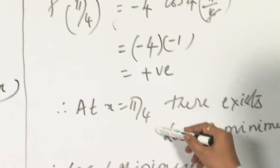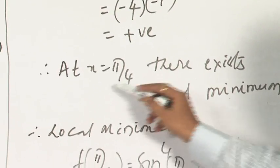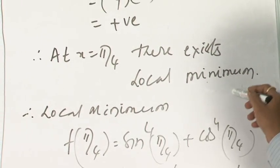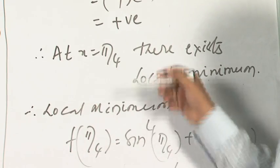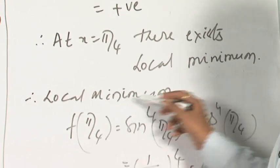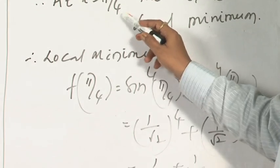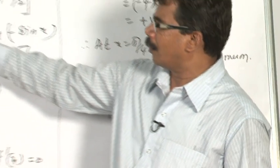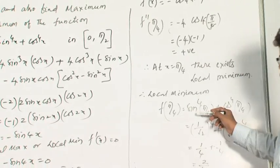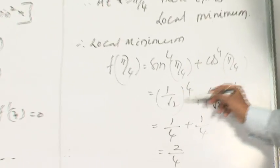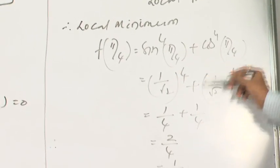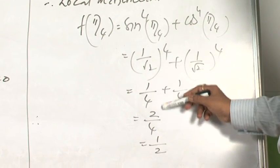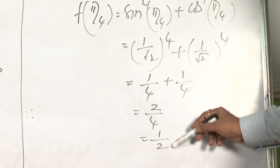So x = π/4 is called the point of local minimum. If x = π/4 is the point of local minimum, what is the local minimum value? Substitute x = π/4 in the given function f(x) = sin⁴x + cos⁴x. You will get (1/√2)⁴ + (1/√2)⁴, since sin(π/4) = cos(π/4) = 1/√2, and if you simplify, you will get 1/2.